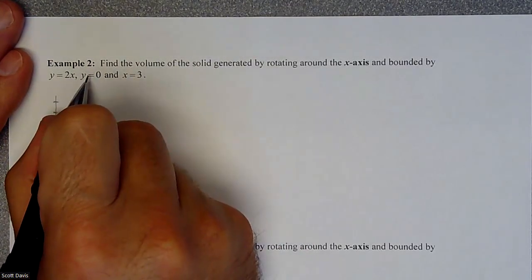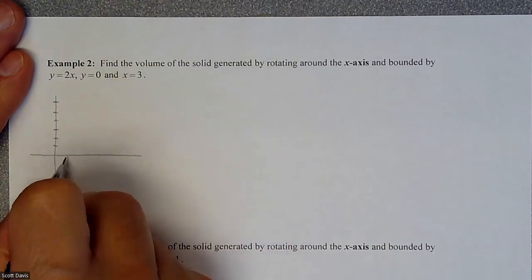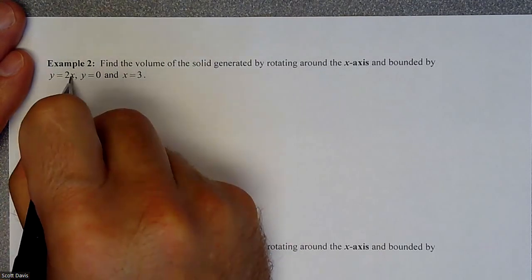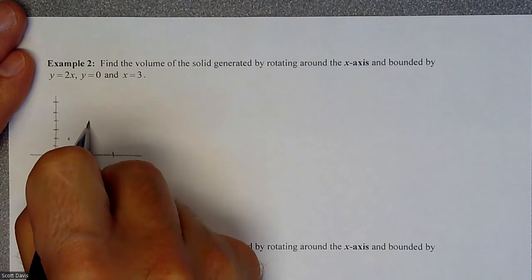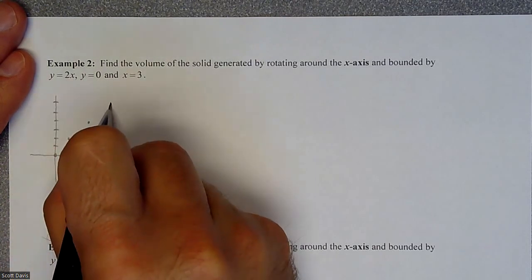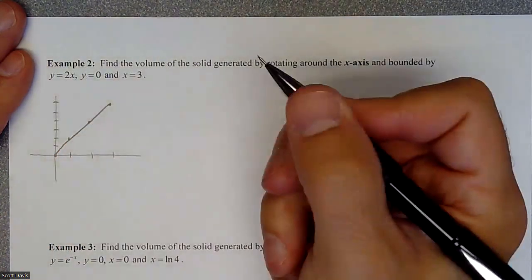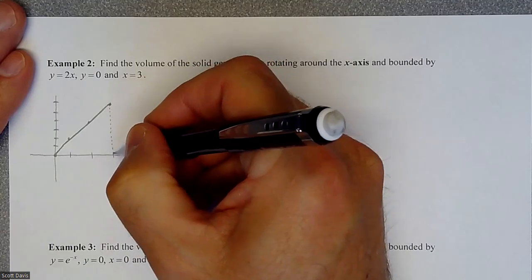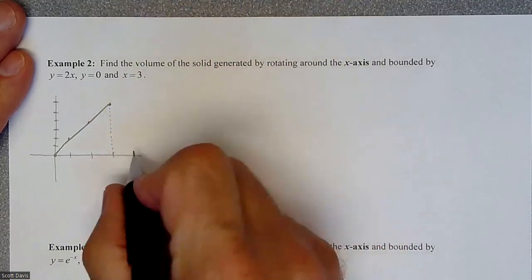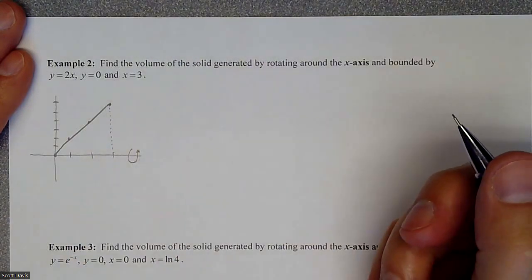So y = 0 is the x-axis, and we're going out to x = 3. If we start at (0,0) and go up 2 over 1, up 2 over 1, and then up 2 over 1, that is our line. That is the shape we are going to be rotating around the x-axis.